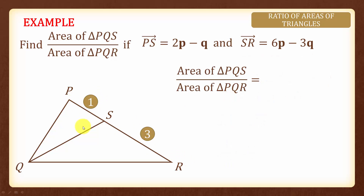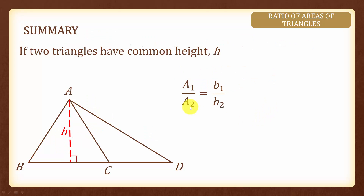Having found the ratio of the bases and noting that the two triangles share a common height H, the area of triangle PQS over area of triangle PQR equals 1 over 4, which is the ratio of their bases. In summary, when two triangles have a common height H, A1 over A2 equals B1 over B2. And that's all for this topic.